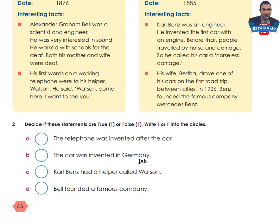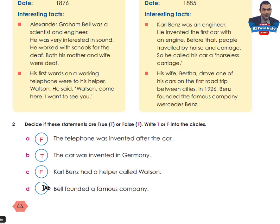Hello again. I will write the answers so you can check yours. A is false — because the car was invented after the telephone. B is true — the car was invented in Germany. C is false — because Alexander Graham Bell had a helper called Watson, not Karl Benz. And D is false — because Karl Benz founded a famous company, not Bell.